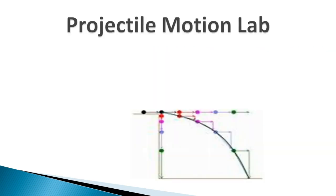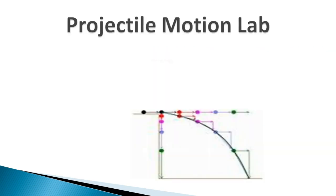In our simulation lab, we made a couple of observations. The first: horizontal motion and vertical motion of a projectile are independent of each other. The rules that govern how an object moves horizontally — forward, backwards — are different than how it moves up and down vertically.